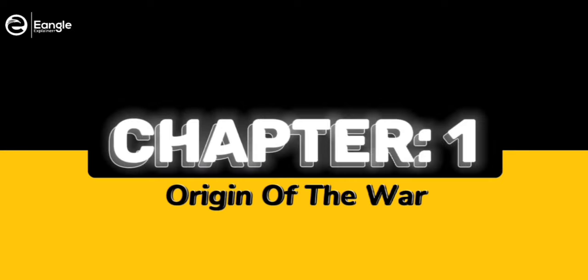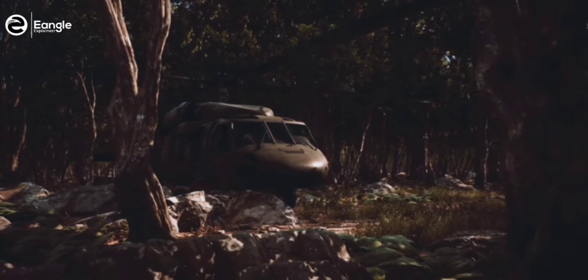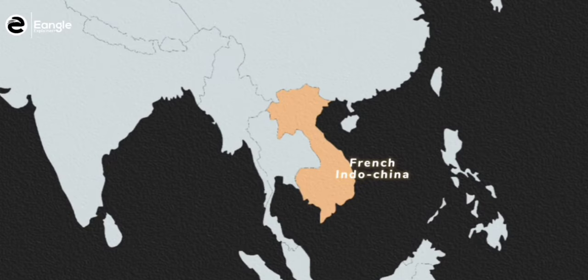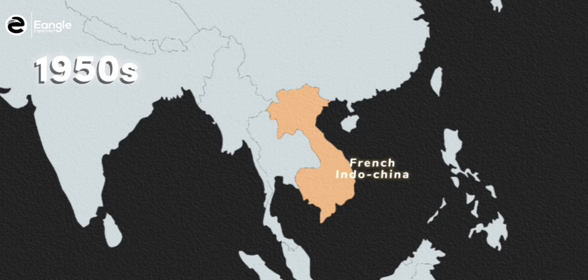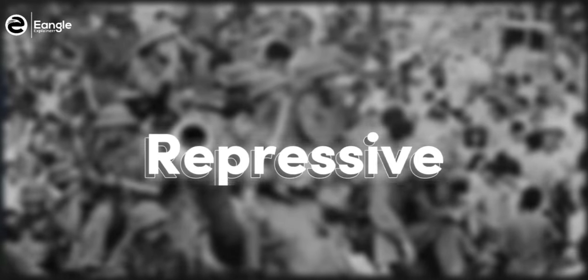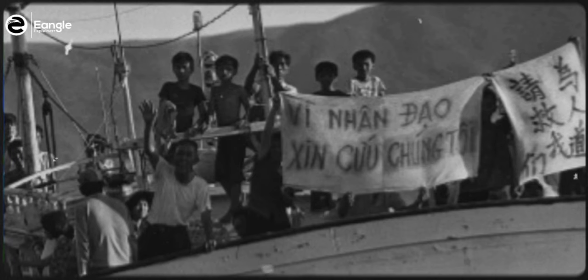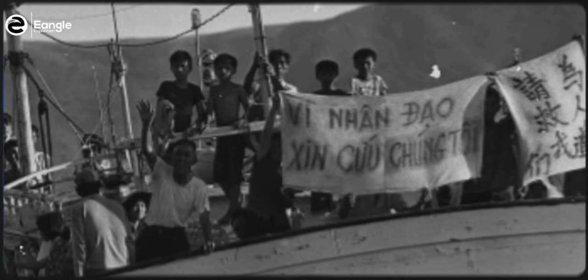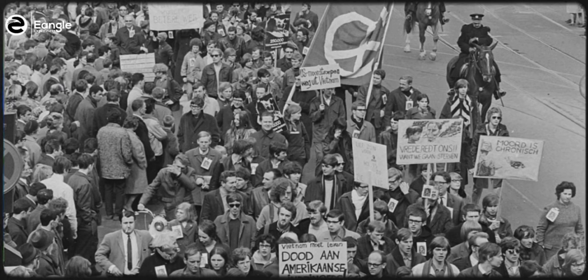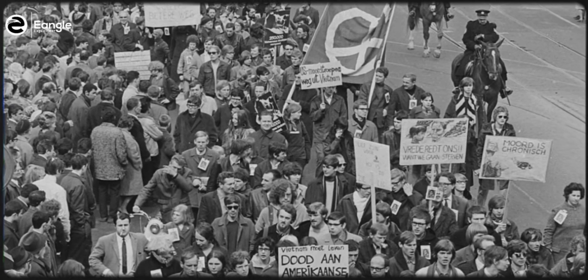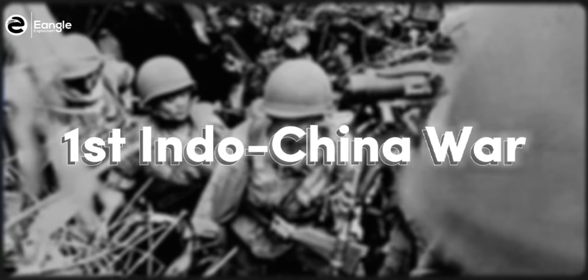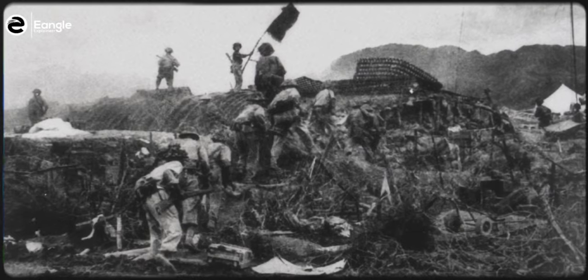The roots of the Vietnam War can be traced back to the period of French colonial rule in Indochina, which lasted from the late 1800s until the mid-20th century. The French authorities imposed a harsh and repressive regime on the native Vietnamese population, which led to widespread resentment and resistance. After World War II, the Vietnamese people began to agitate for independence from France, leading to the First Indochina War, which lasted from 1946 to 1954. The Vietnamese fought a guerrilla war against the French and ultimately succeeded in driving them out of the country.